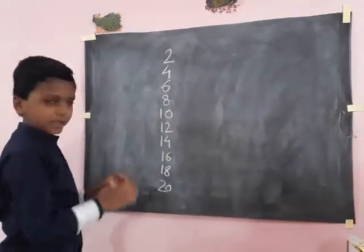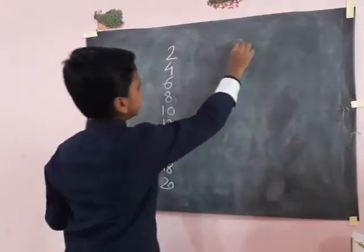First write table of 2. Then write 20 as it is.